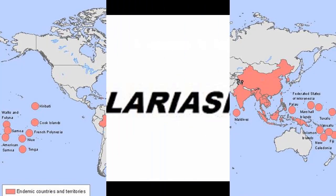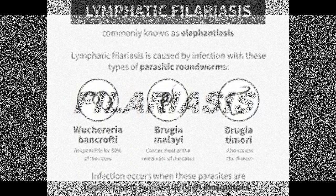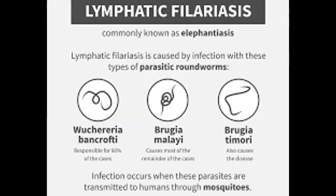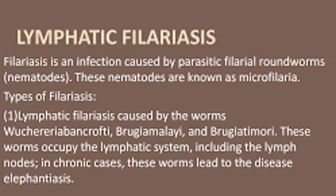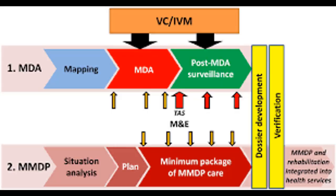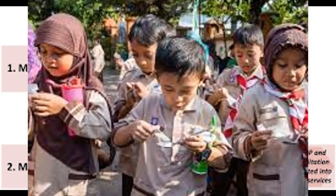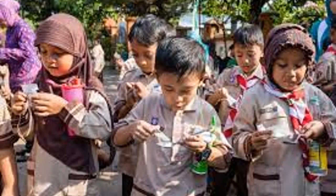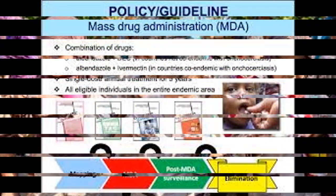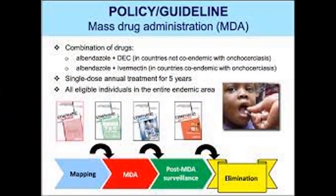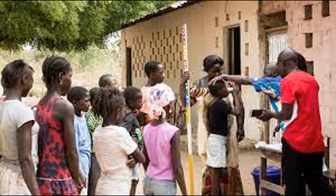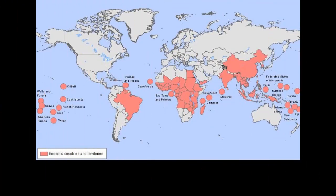The epidemiology of lymphatic filariasis is changing due to implementation of a global program of Mass Drug Administration (MDA) to eliminate transmission. Not only has mapping of disease prevalence prior to MDA led to reclassification of some countries — Costa Rica, Suriname, Trinidad and Tobago — as non-endemic, but more than 20 countries have been able to stop MDA due to interruption of transmission.